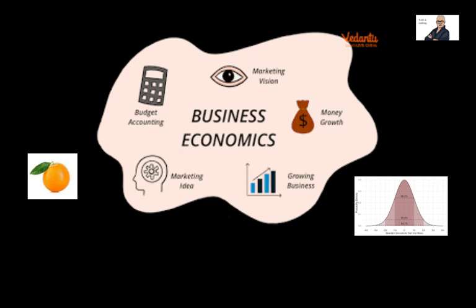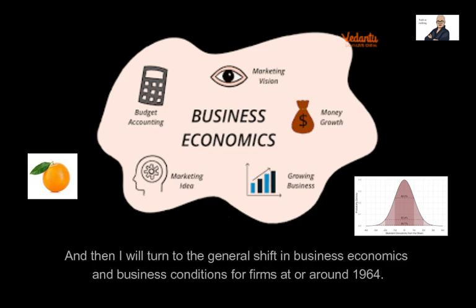It will also tell you how many oranges you should pick and test to be sure at a certain level — for instance, 95% sure, which will be the same as 5% sure that there are no problems. And then I will turn to the general shift in business economics and business conditions for firms at or around 1964.